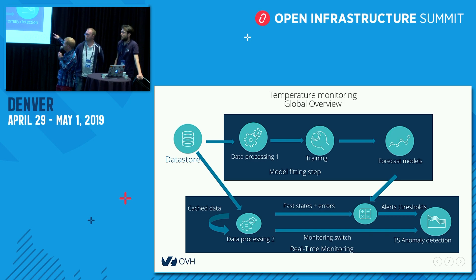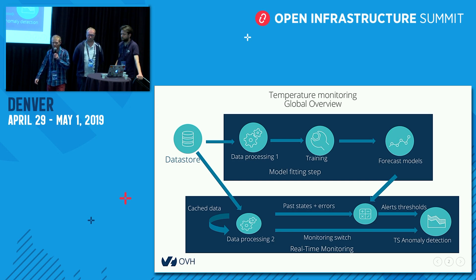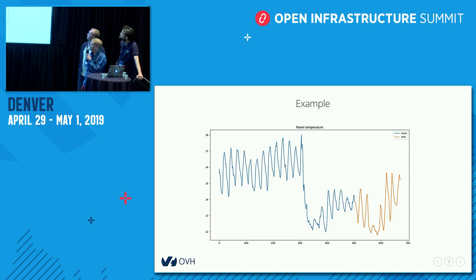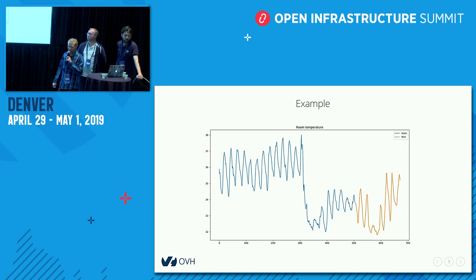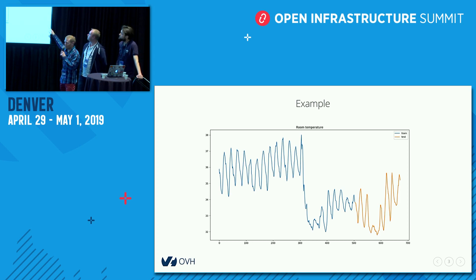We generate dynamic forecasts and then compare the forecast temperature to the real one observed. If the real one goes too far away from the forecast, we raise some alerts. Let's illustrate with a real example. This is the temperature curve of one of our rooms in one of our data centers. We train the model on the blue curve — the temperature history — and evaluate it on the more recent history, the yellow part, to determine what the thresholds should be. Then we use the trained model to generate out-of-sample forecasts, the points in the future on the right of the plot.